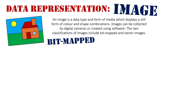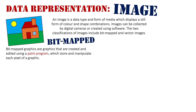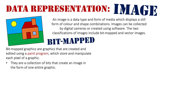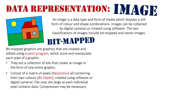I'm sure you've all got experience using a bitmap paint program and drawing an image. Bitmap graphics are graphics that are created and edited using a paint program — that's the classification of a program that makes bitmapped images, which store and manipulate each pixel of the graphics. These graphics are made up of little squares called pixels, a collection of bits that create the image in the form of one entire graphic. Every single pixel, every single bit related to that pixel, has data behind it.